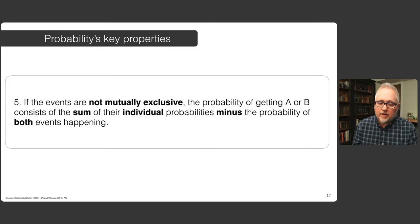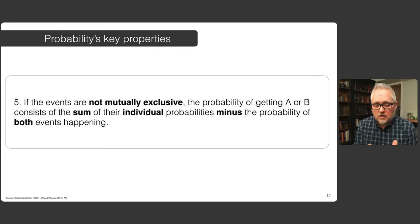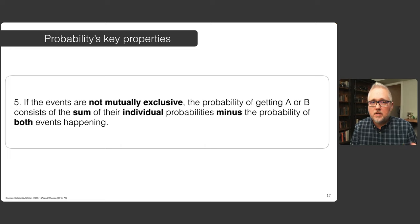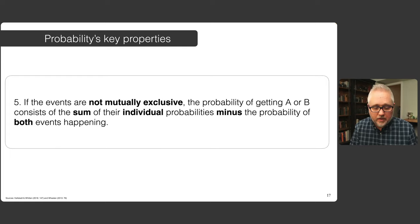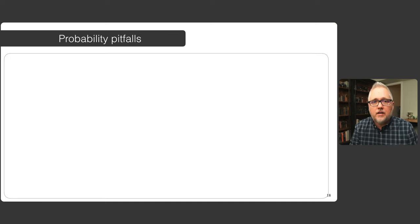That means you have to take away some of the probability that you had assumed was going towards either heads or tails to put towards that highly unlikely third outcome. So if events are not mutually exclusive, the probability of getting one or the other is the sum minus the probability of getting both at the same time. That one I think is less relevant because we often assume that our different outcomes we're studying are mutually exclusive.